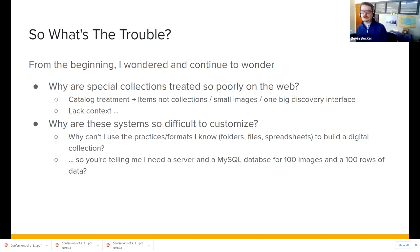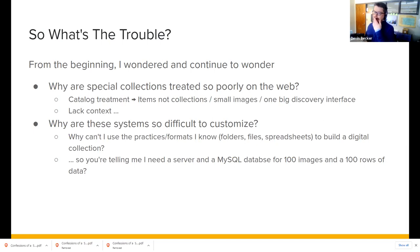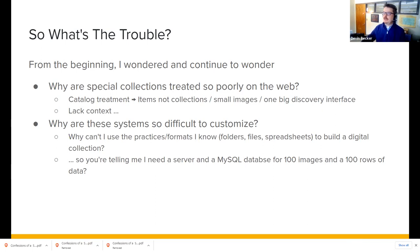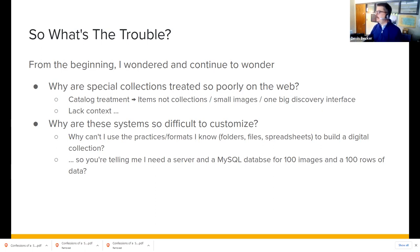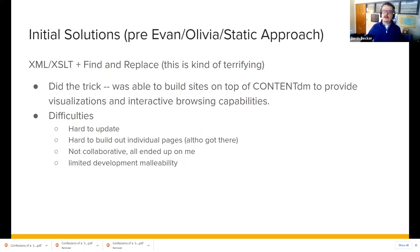Initially I thought, that just doesn't make a lot of sense. As the static stuff came up I really realized — wow, that's actually all you need: a hundred images in a spreadsheet and create a website from that. That's the goal of CollectionBuilder itself. Pre-Evan-and-Olivia — the characters I'll talk about in a second — in our static approach I used XML and XSLT to create static sites and build templates on top of ContentDM to add contextual pieces to collections. I also did a lot of find-and-replace over our live website, which is kind of terrifying to me now.